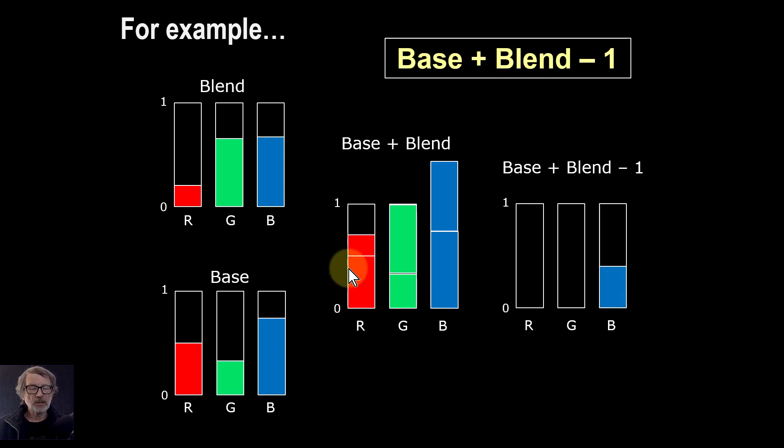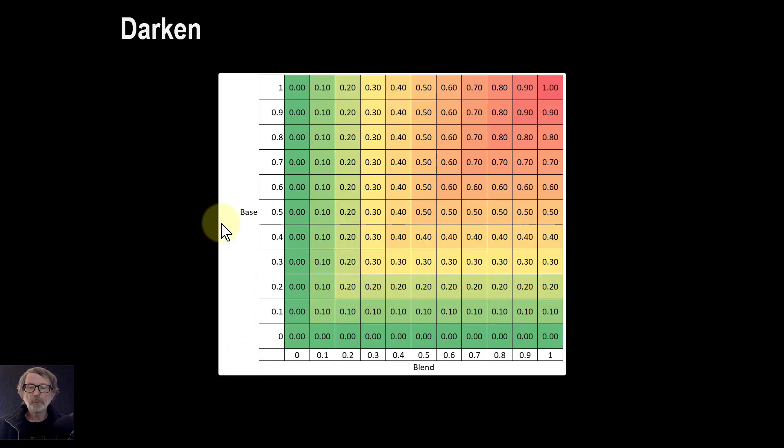Let's have a look at this and how it progresses in the different blend modes. So for Darken, your base layer here goes from 0 to 1, from black to white. And the blend layer goes from 0 to 1, black to white. And look here, that's the L-shaped patterns you're getting in here. It's mirror image, so it means it's commutative, which means you can do it one way and the other way.